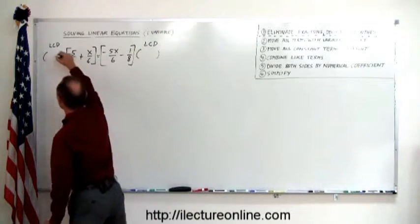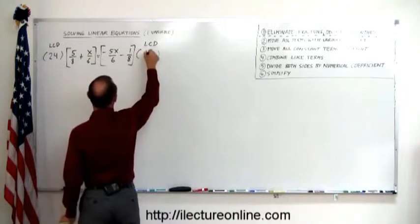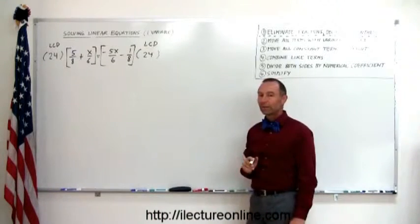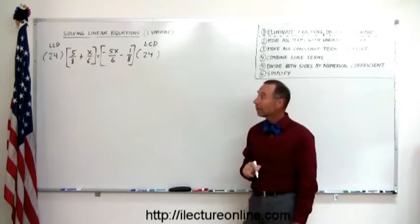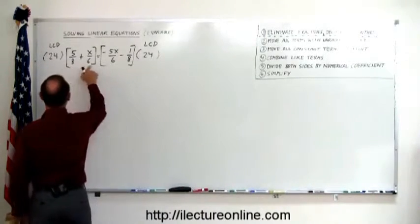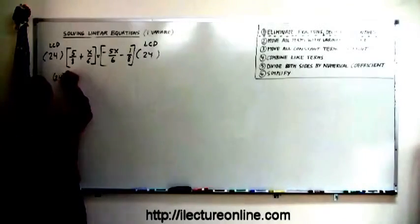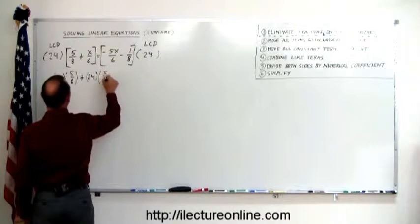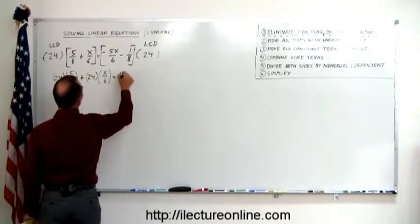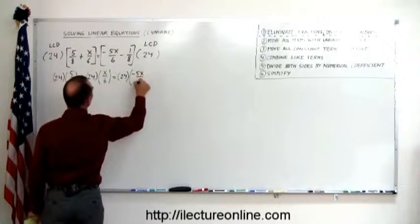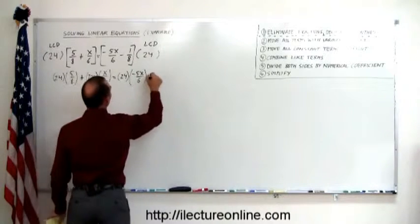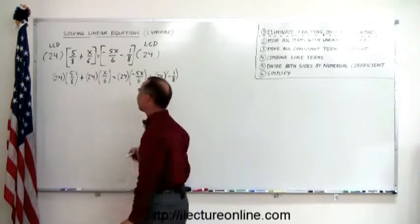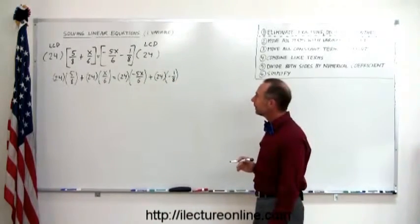In another lecture we'll go through a much more systematic way of finding the lowest common denominator, but for now it's simply good enough to say 24 works. So I'm going to multiply both sides of the equation by 24, and that will get rid of my denominators. You'll see in just a moment how. So now we're going to multiply the 24 by each of these, so I'm going to write out like this: 24 multiplied times 5 over 8 plus 24 multiplied times x over 6 equals 24 multiplied times minus 5x over 6 and plus 24 times minus 1/8.